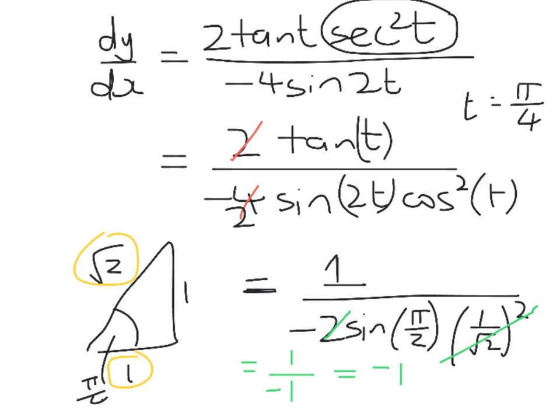So my derivative is -1. So when t = π/4, the gradient of the tangent is just equal to -1. That was a merit question, or remember, you get an achieved tick if you've got one of your derivatives.